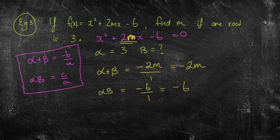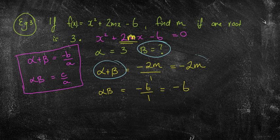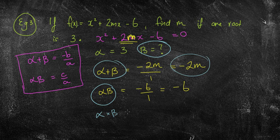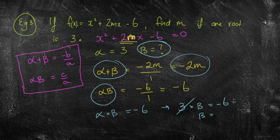I've found what alpha beta and alpha plus beta equal to, but I still have m unknown. What's important is figuring out what beta is — because if I know beta, I can substitute back to find negative 2m. Looking at alpha beta: we know alpha is 3 and the product is negative 6. So 3 times beta equals negative 6, meaning beta equals negative 2.